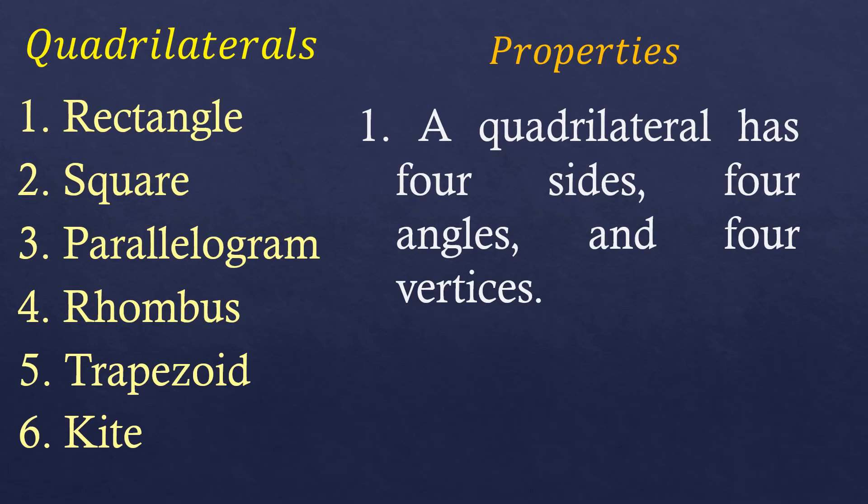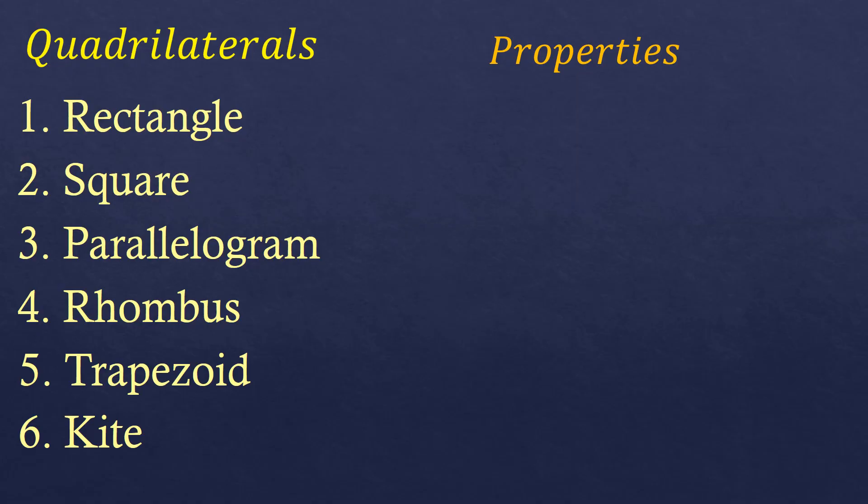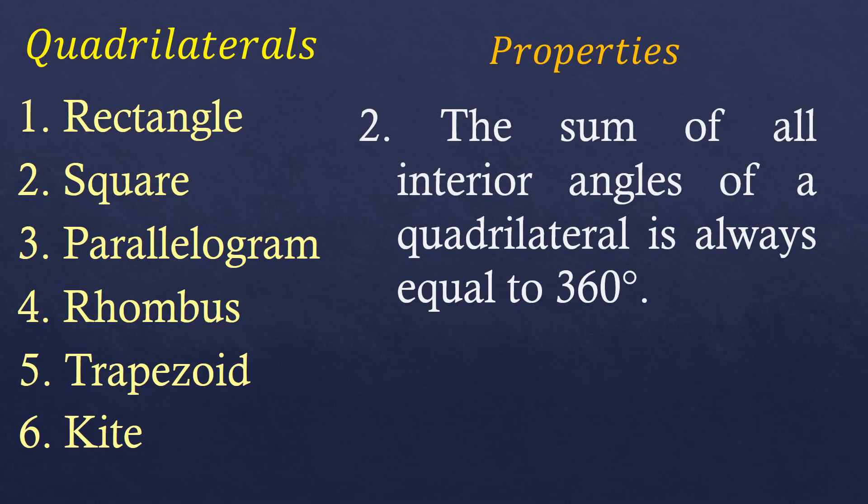First is a quadrilateral has four sides, four angles, and four vertices. Second is the sum of all interior angles of a quadrilateral is always equal to 360 degrees. The interior angles have the same concept as a triangle — they are the angles inside the figure or shape.